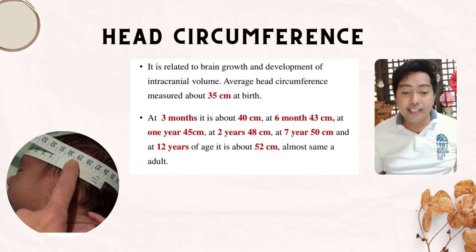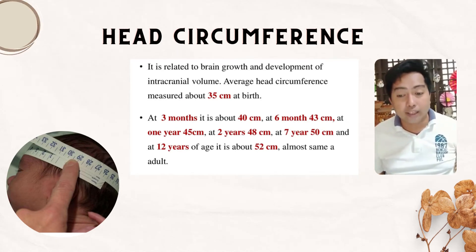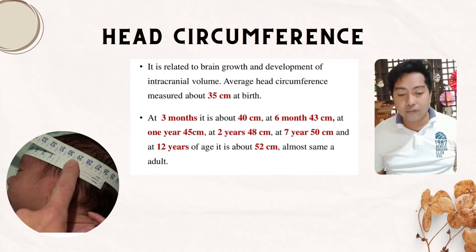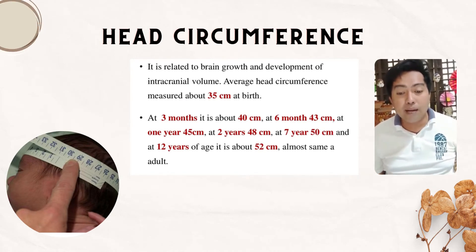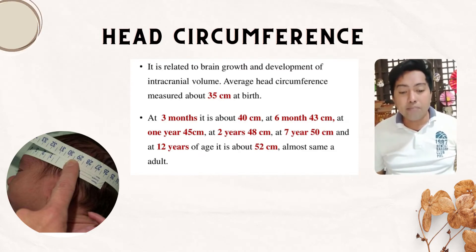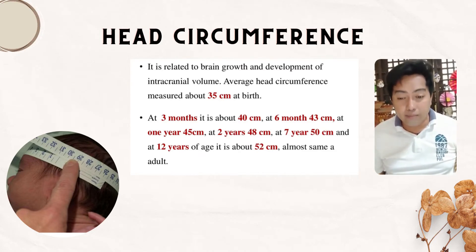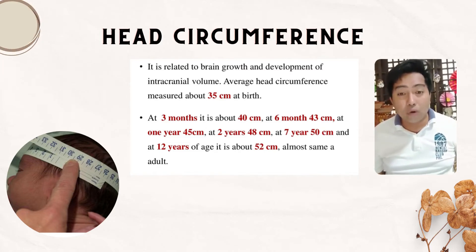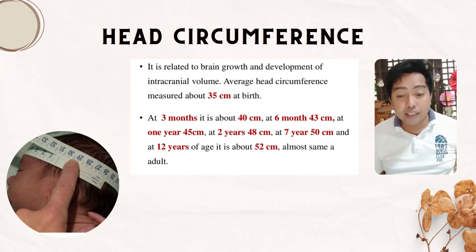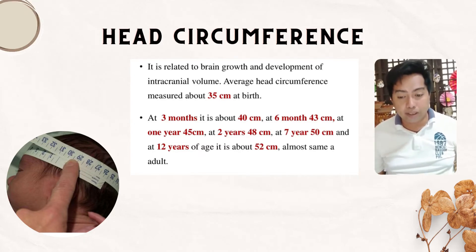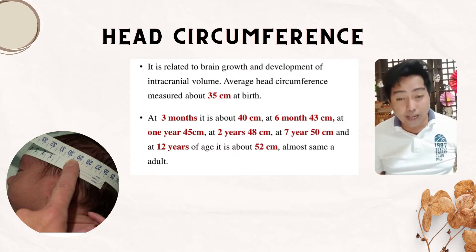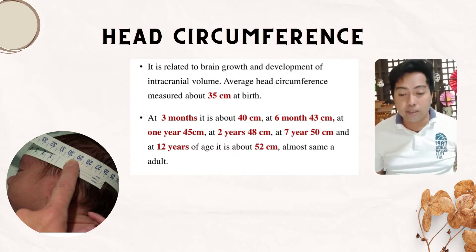Head circumference is related to brain growth and development. The average head circumference is about 35 cm at birth; 40 cm at 3 months; 43 cm at 6 months; 45 cm at 1 year; 48 cm at 2 years; 50 cm at 7 years; and about 52 cm at 12 years of age — almost the same as an adult.